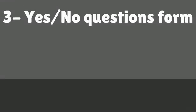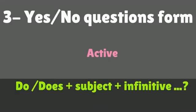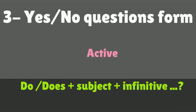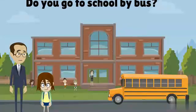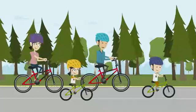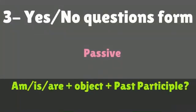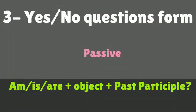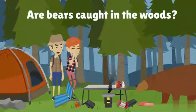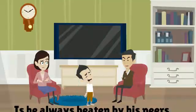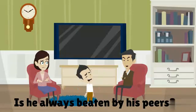Yes/No Questions form — Active: Do or Does plus subject plus infinitive. Examples: Do you go to school by bus? Does he ride a bike? Passive: Is or Are plus object plus past participle. Examples: Are bears caught in the woods? Is he always beaten by his peers?